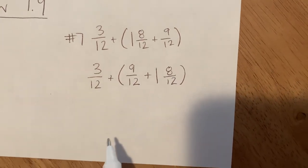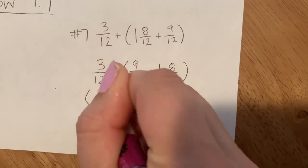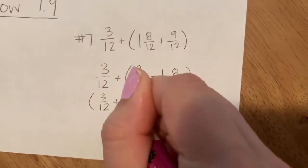But I don't want to do that. I want to start by adding 3 twelfths plus 9 twelfths.